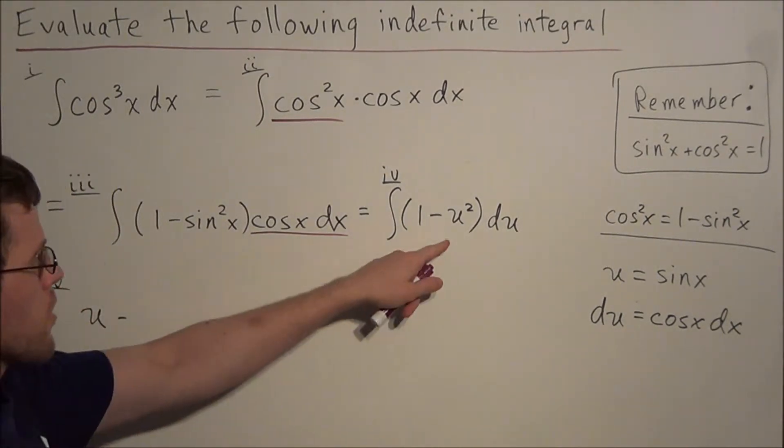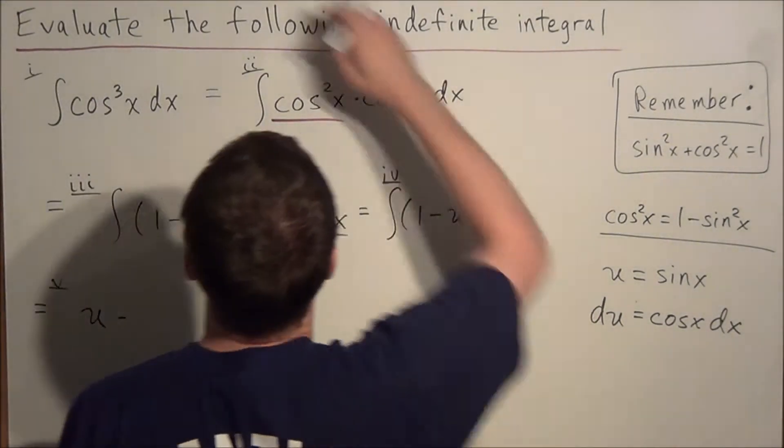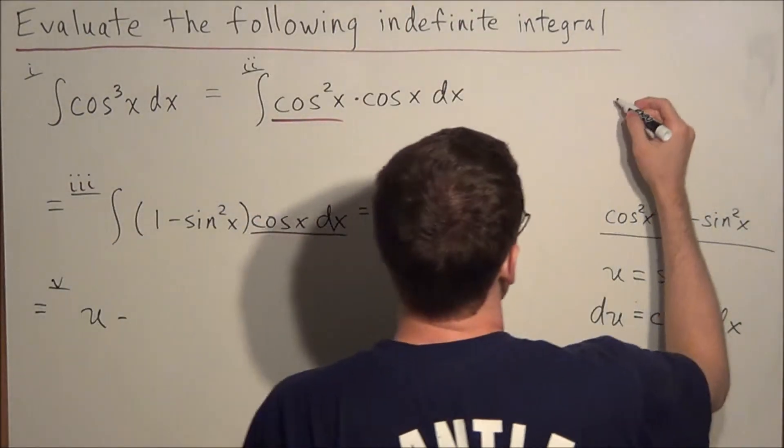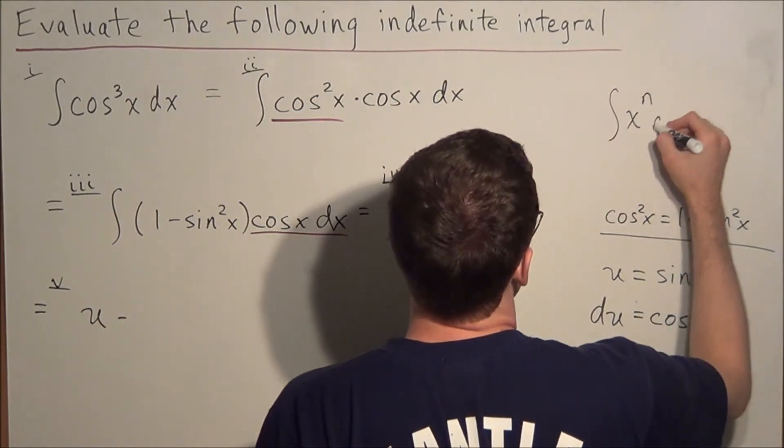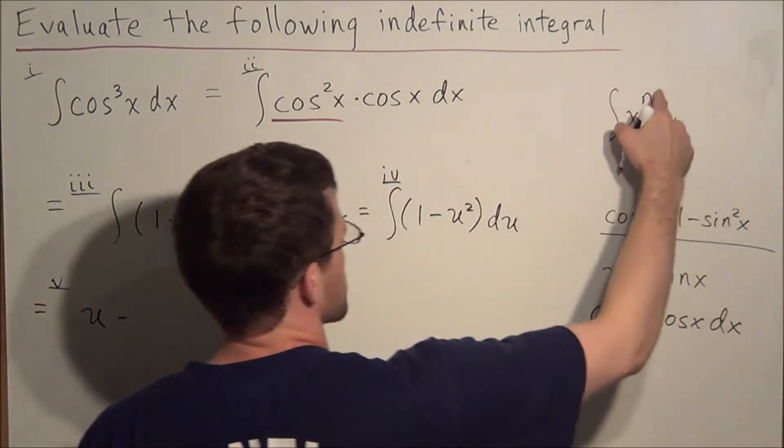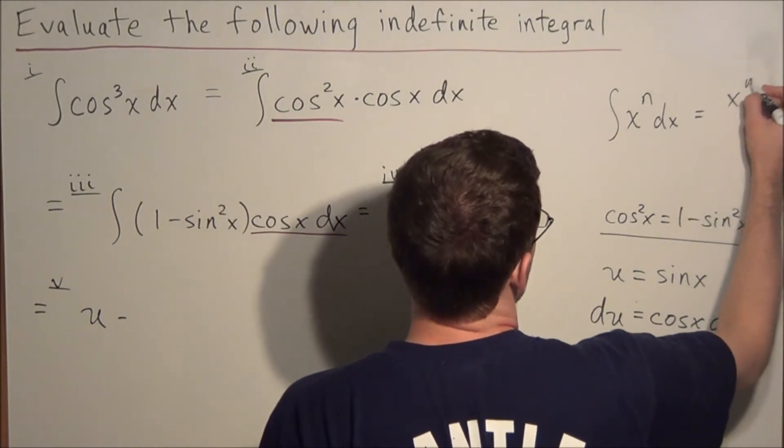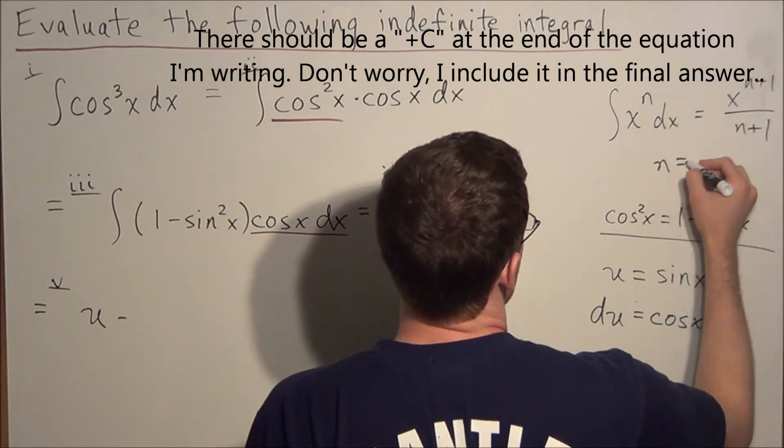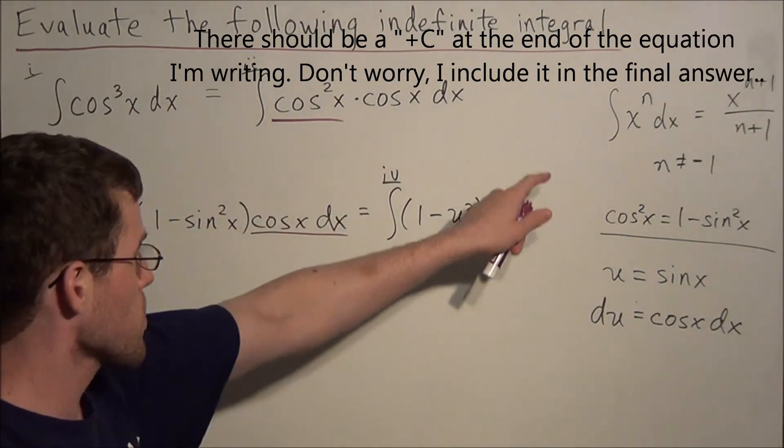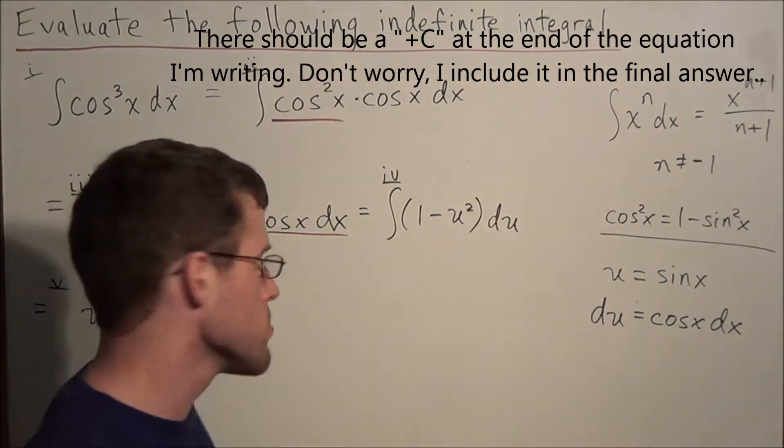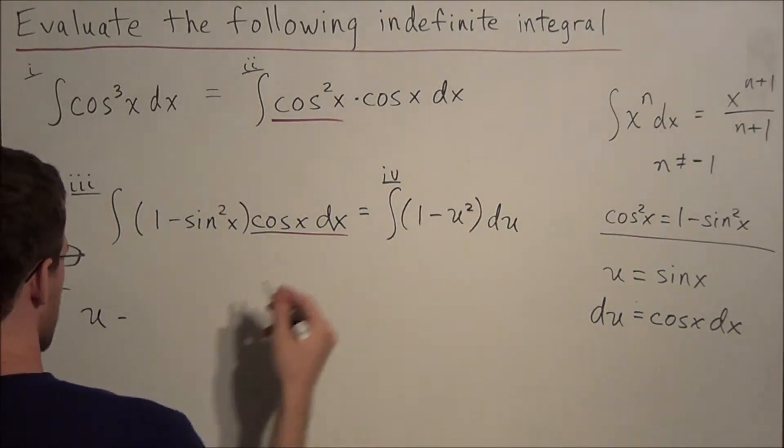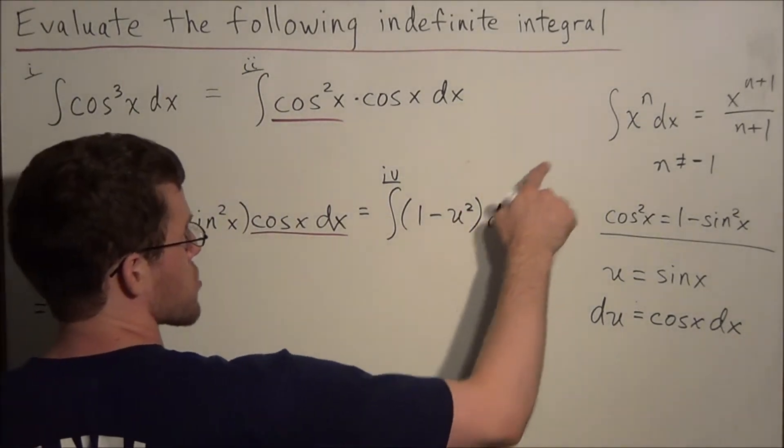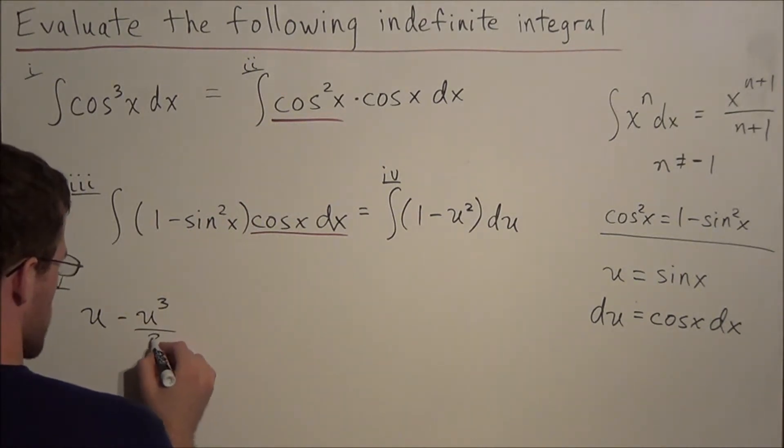And now we could use the power rule. Remember in general, and we'll just write this over here, just so you have it. The anti-derivative of x to some power n is equal to x to the n plus 1 over n plus 1, when n is not equal to negative 1. So we use this power rule to find the anti-derivative of u squared, which would be u to the third, so we're doing u to the 2 plus 1 divided by 2 plus 1, which is 3.